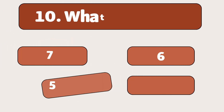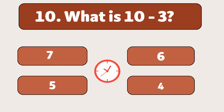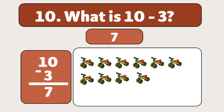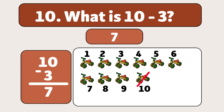What is 10 minus 3? The answer is 7. We start with 10 bicycles and take away 3. Let's count: 1, 2, 3. We have 7 bicycles now.